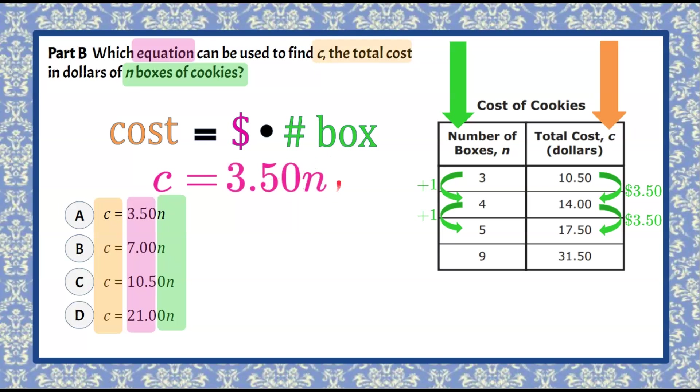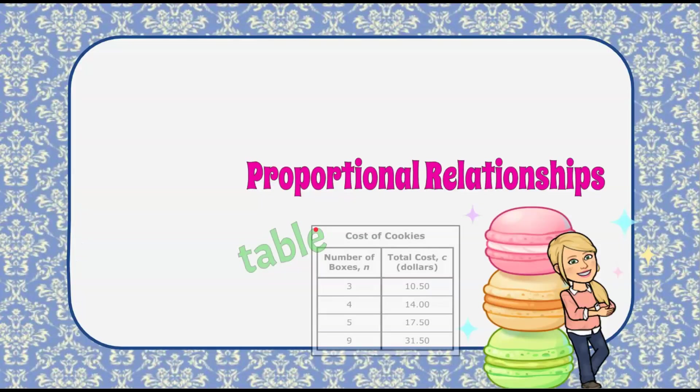And then whenever we want to determine if we want to buy a hundred boxes we're going to do three dollars and fifty cents times one hundred. So we can see that this is answer choice A. C equals 3.50 times n and there you have it. That is how you represent proportional relationships with a table or with an equation.